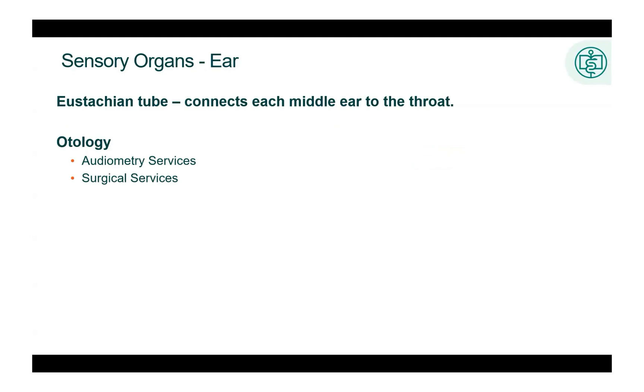Otology is the study of the ear. This is a very specialized field of medicine. There are two types of services, audiometry and surgical. Surgical services are often performed by an ENT physician, and the codes for procedures are typically found in the medical section, section zero of the PCS codebook. Audiometry services are studies to test and improve your hearing. These codes are in section F, physical rehab and diagnostic audiology of the PCS codebook.